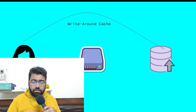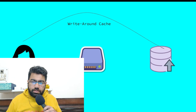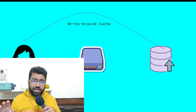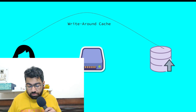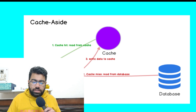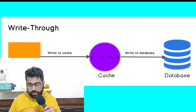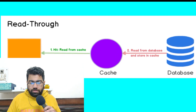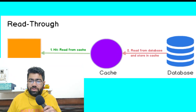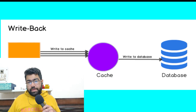Write-around cache means the client writes directly to the database without going through the cache. The cache is not updated on write. When the cache gets updated depends on the read technique being used. For example, if using cache-aside as the read technique, the cache gets populated on the next read. You can combine any write technique with any read technique — for example, write-around with read-through, or write-around with cache-aside. That's how you build different types of cache configurations.